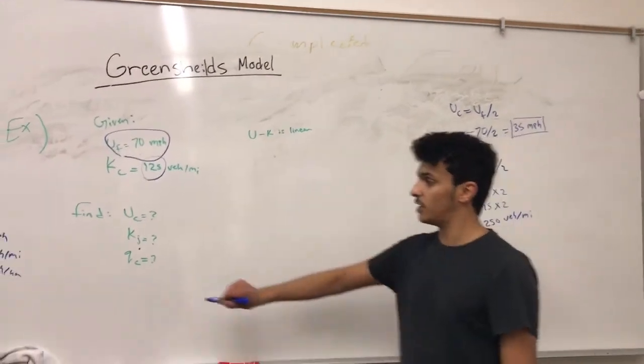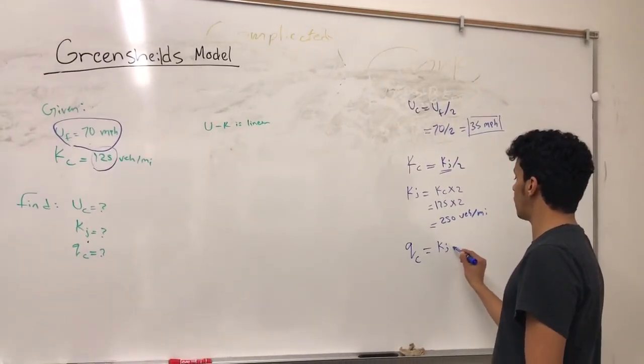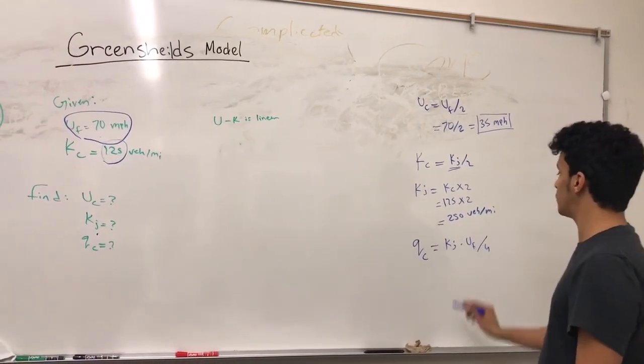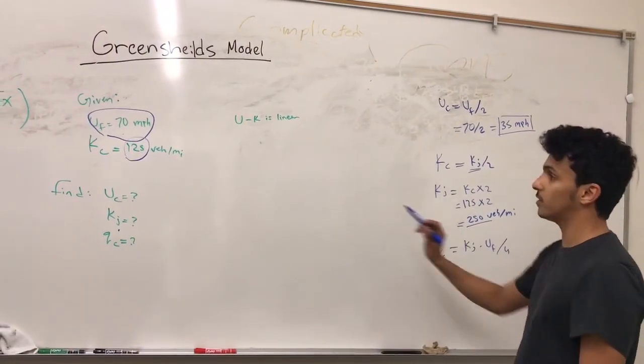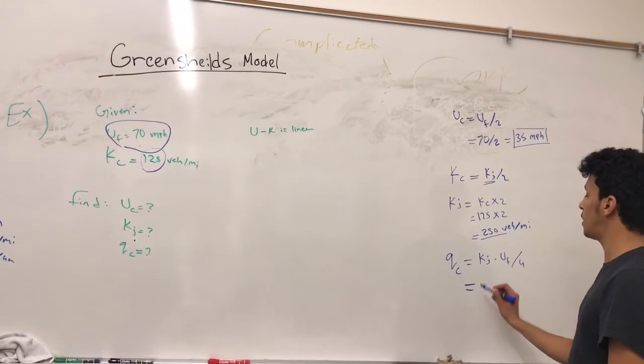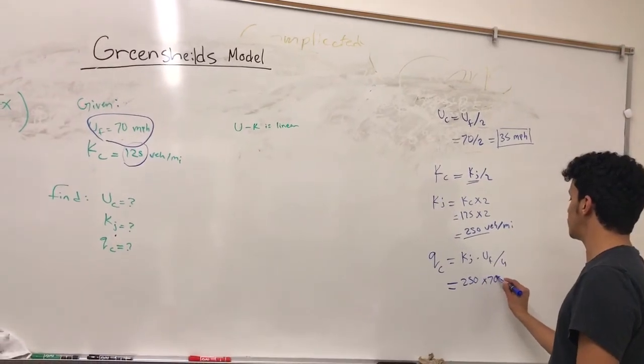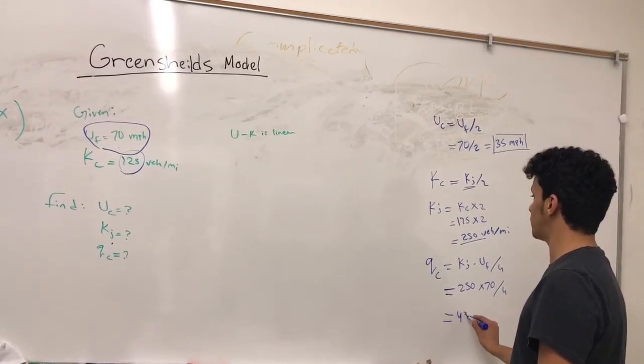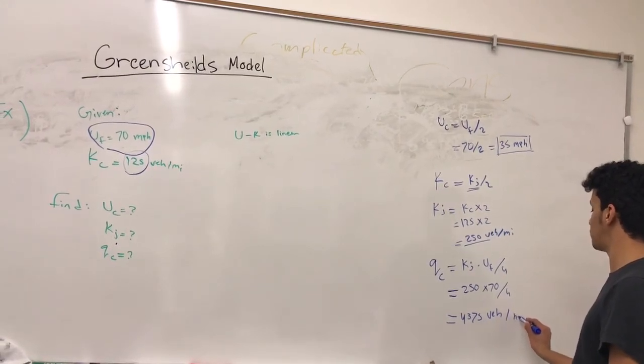The last part of this question is to find the capacity. And we know that the capacity equals jam density multiplied by free flow speed divided by 4. We already got the jam density and we were given the free flow speed. So the jam density is 250 multiplied by 70 divided by 4. And that equals 4,375 vehicles per hour.